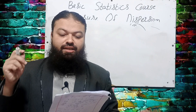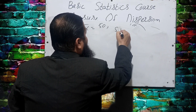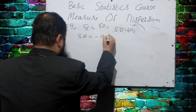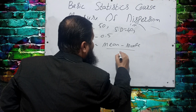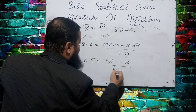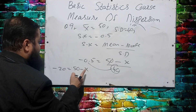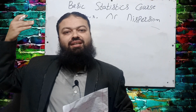Question number nine: the mean, standard deviation, and coefficient of skewness of a frequency distribution are 50, 40, and −0.5 respectively. Find the mode. Using the formula: skewness = (mean − mode) / standard deviation. Substituting: −0.5 = (50 − mode) / 40, so 40 × (−0.5) = −20 = 50 − mode, giving mode = 50 + 20 = 70. In the paper, 70 is the correct option.